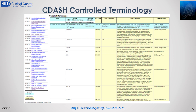This is an example of the CDISC-controlled terminology implemented at NCI. You see the various control dictionaries on the left, and then by selecting one, you see the various names, the data types, the CDISC definition, as well as the NCI preferred term.